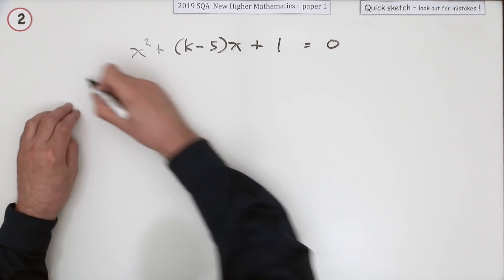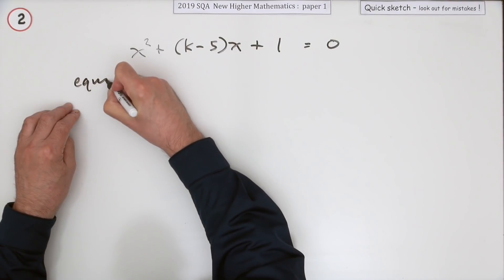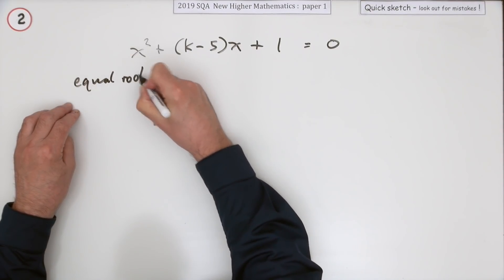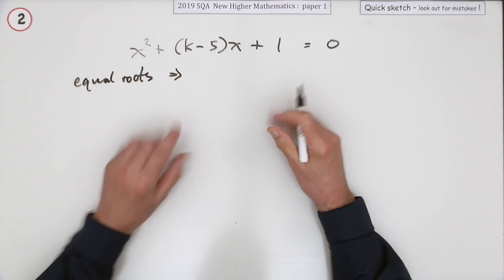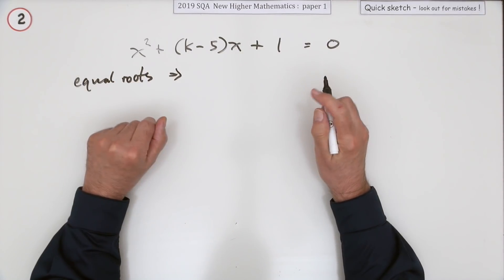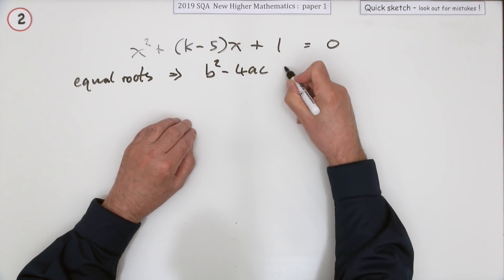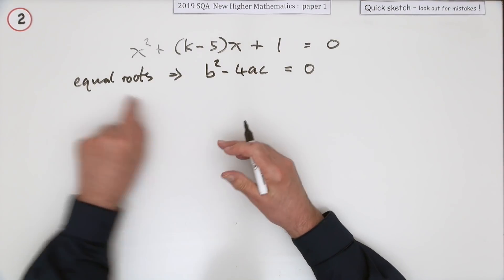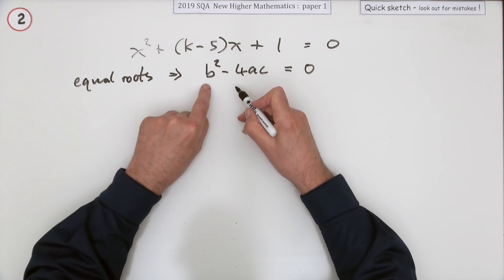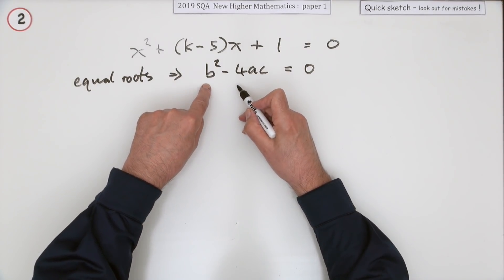Well, just make a statement then. You're looking for equal roots. Well, that means, and that should ring the bell, discriminant. The discriminant, that b squared minus 4ac, that should equal zero for equal roots.